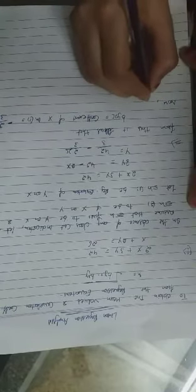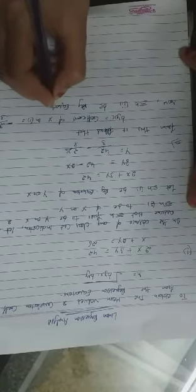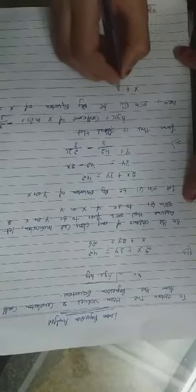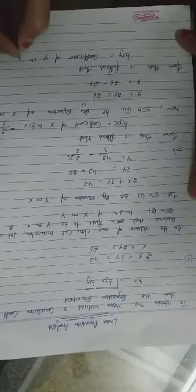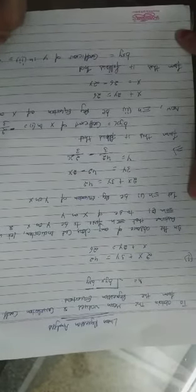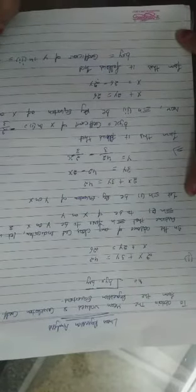Now equation 2 is taken as the regression equation of x on y: x + 2y = 26, so x = 26 − 2y. From this it follows that bxy, the coefficient of y in equation 2, is equal to −2.